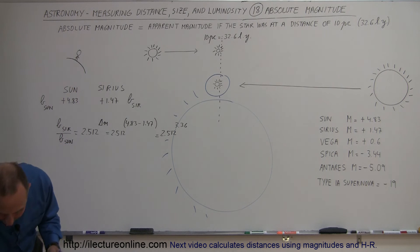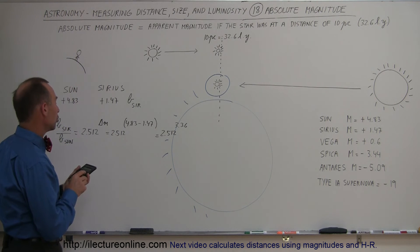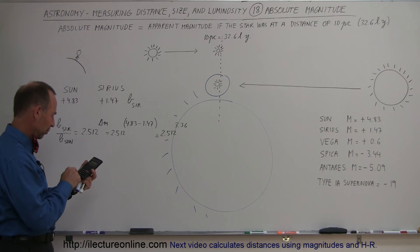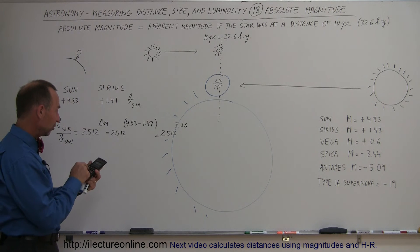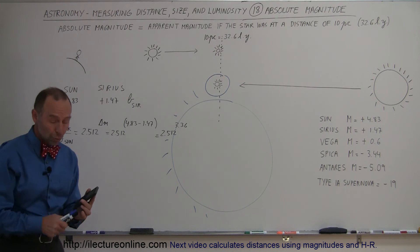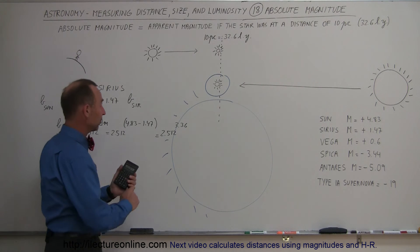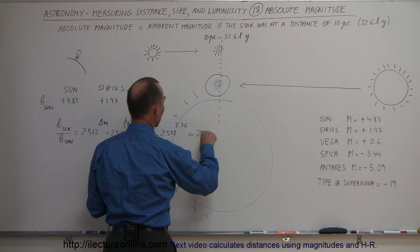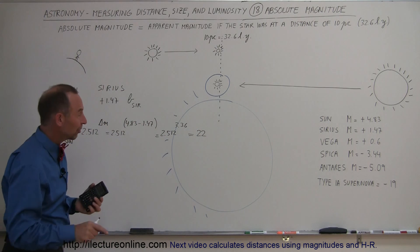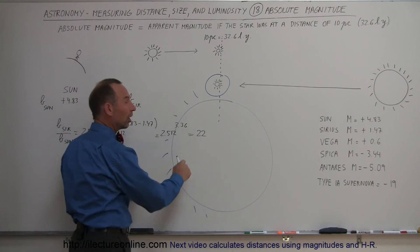And let's find out how much brighter Sirius is compared to the sun. All right, so 2.512 raised to the 3.36 equals 22 times as bright. That's interesting. So it's equal to 22, which means Sirius puts out as much light as 22 suns.